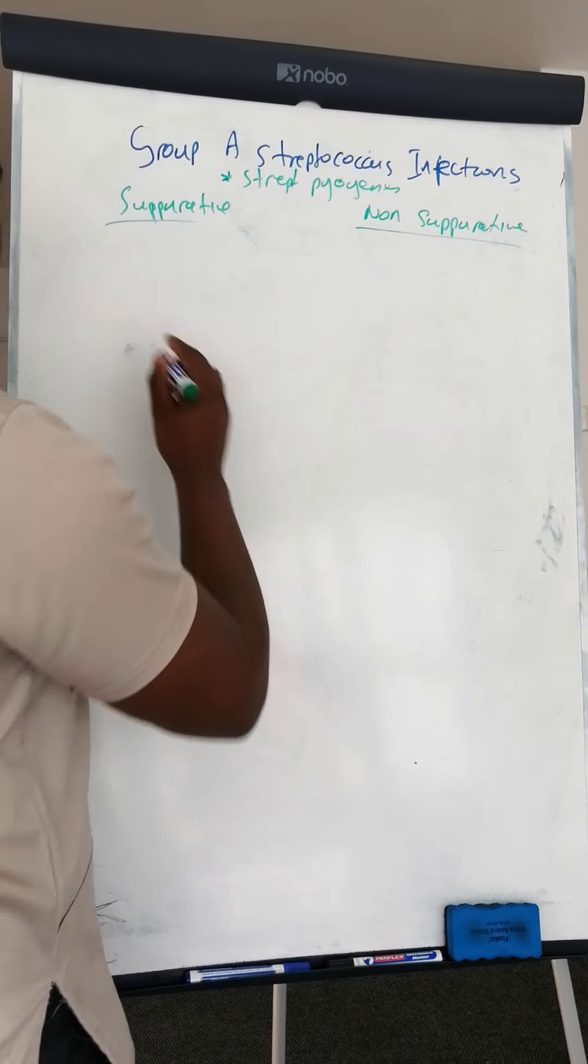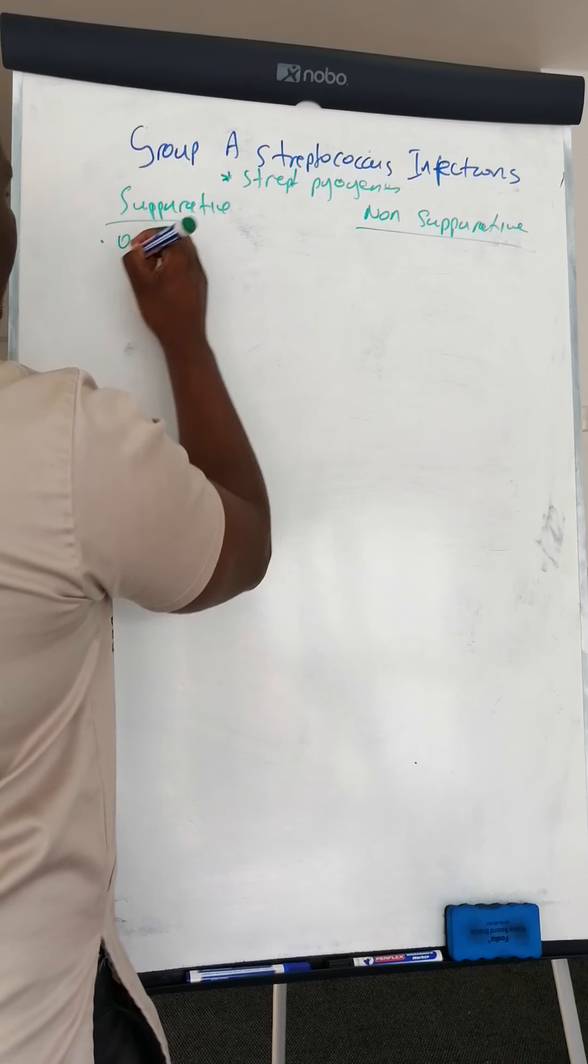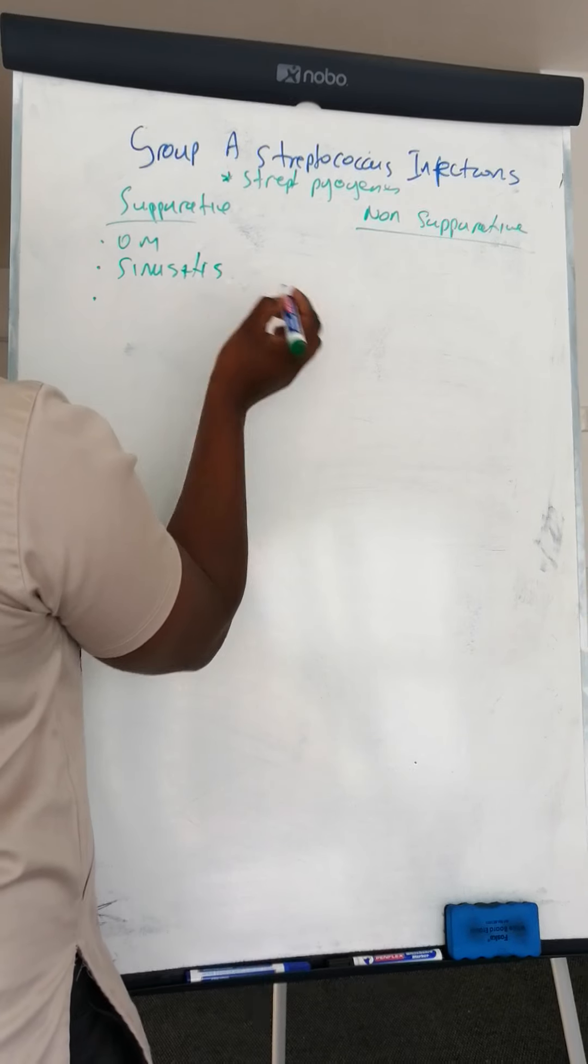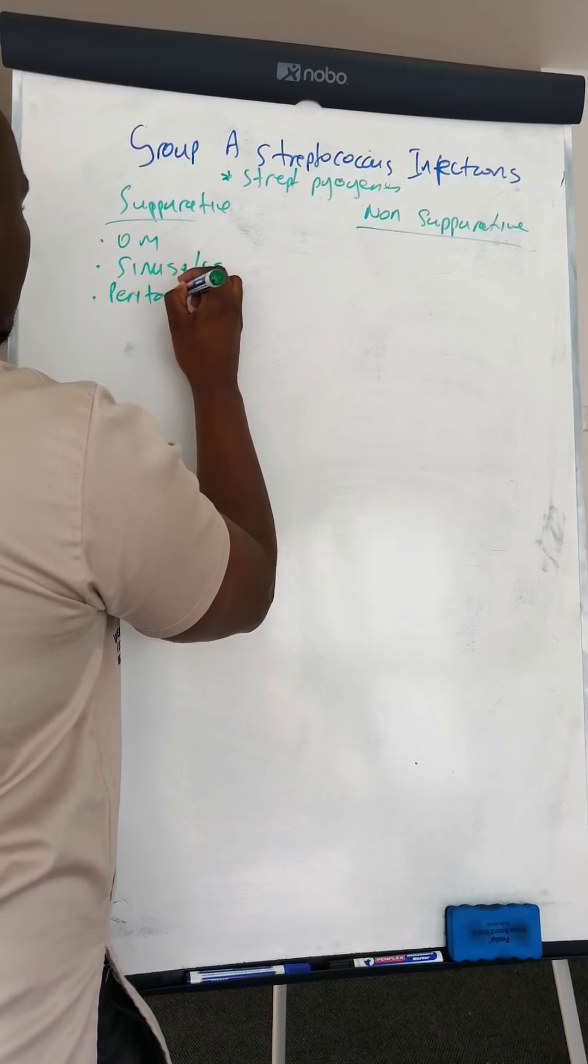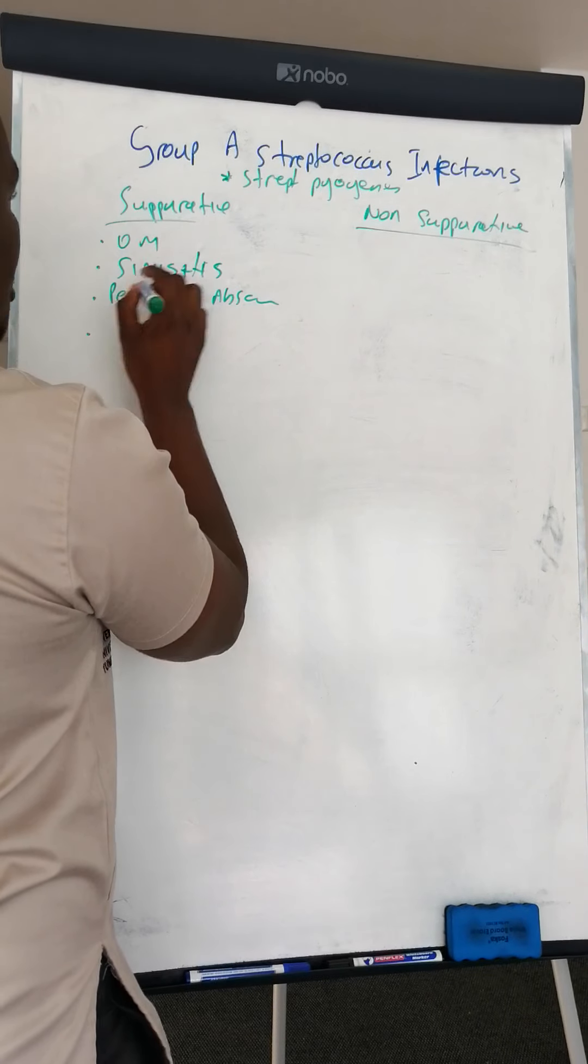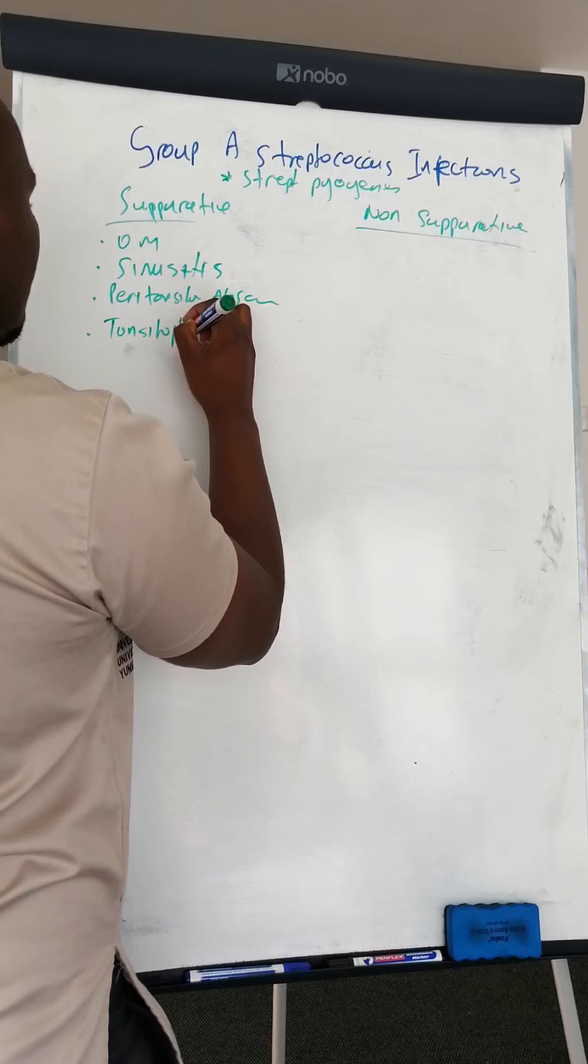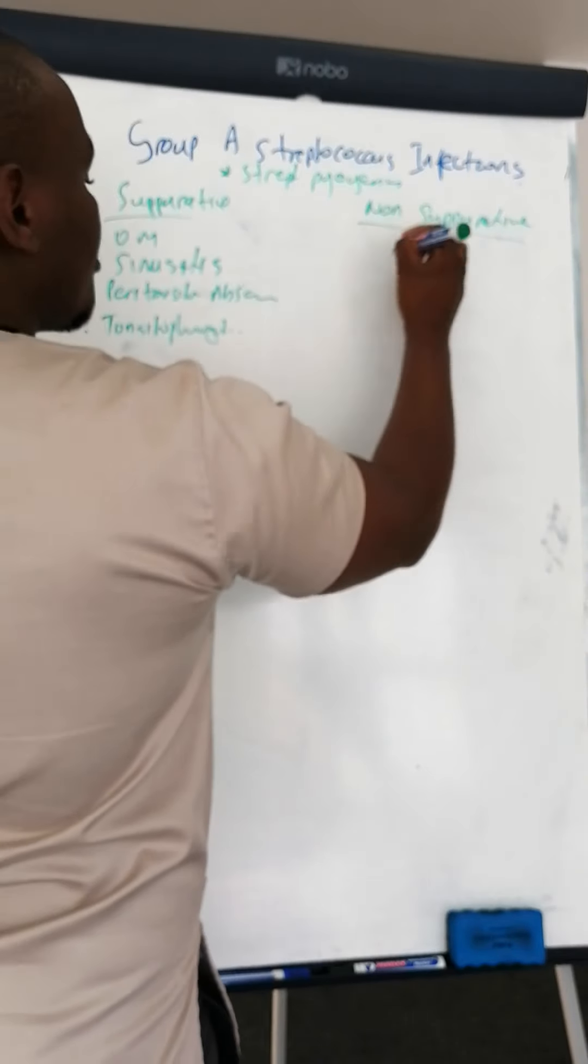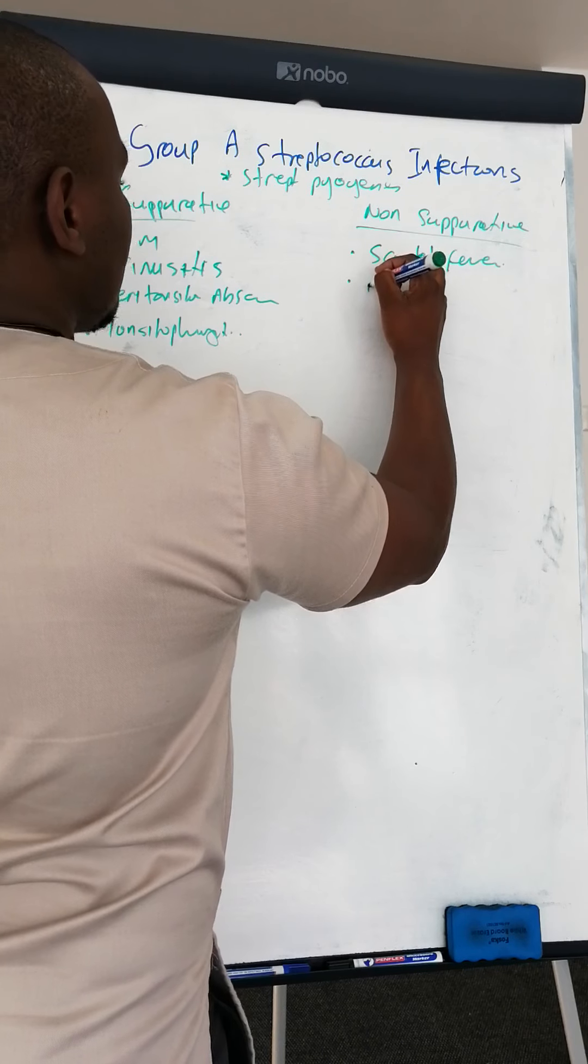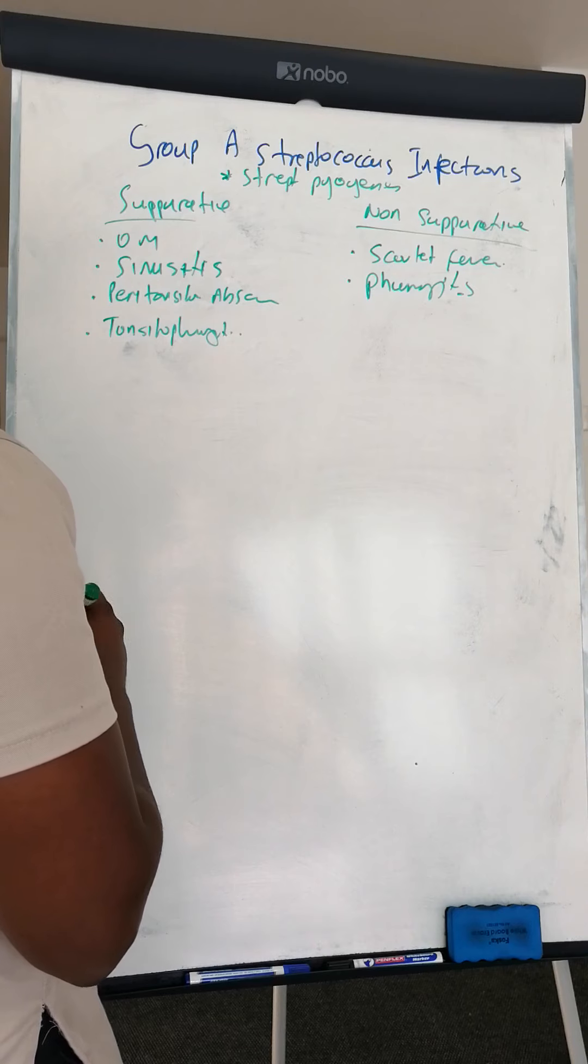Suppurative is like pus-forming. The ones that are pus-forming are your otitis media, sinusitis, peritonsillar abscess, and tonsillar pharyngitis. Then the non-suppurative one is scarlet fever and pharyngitis.